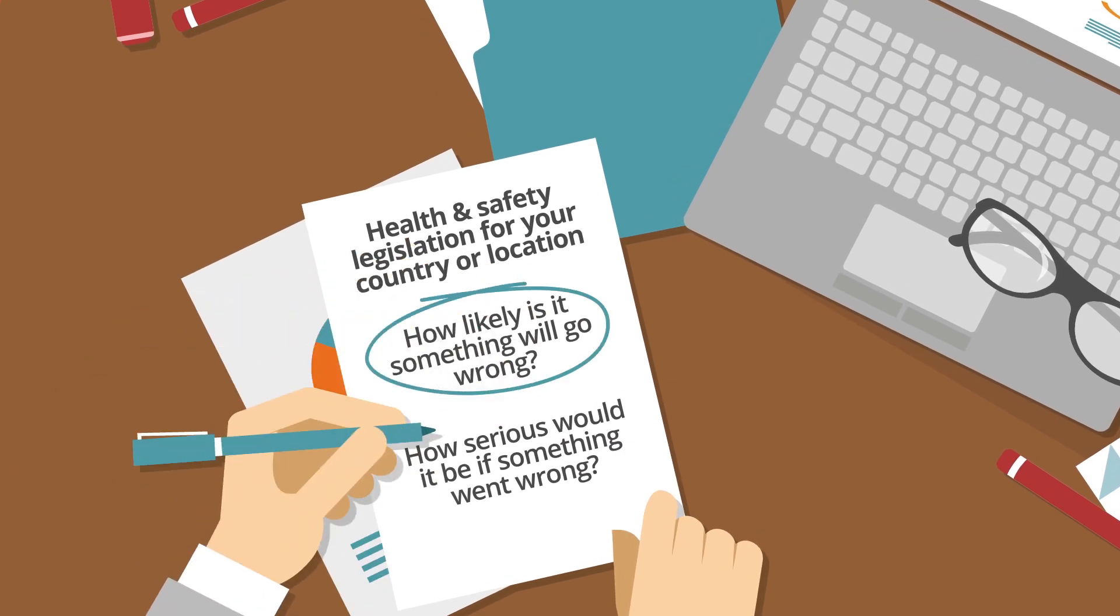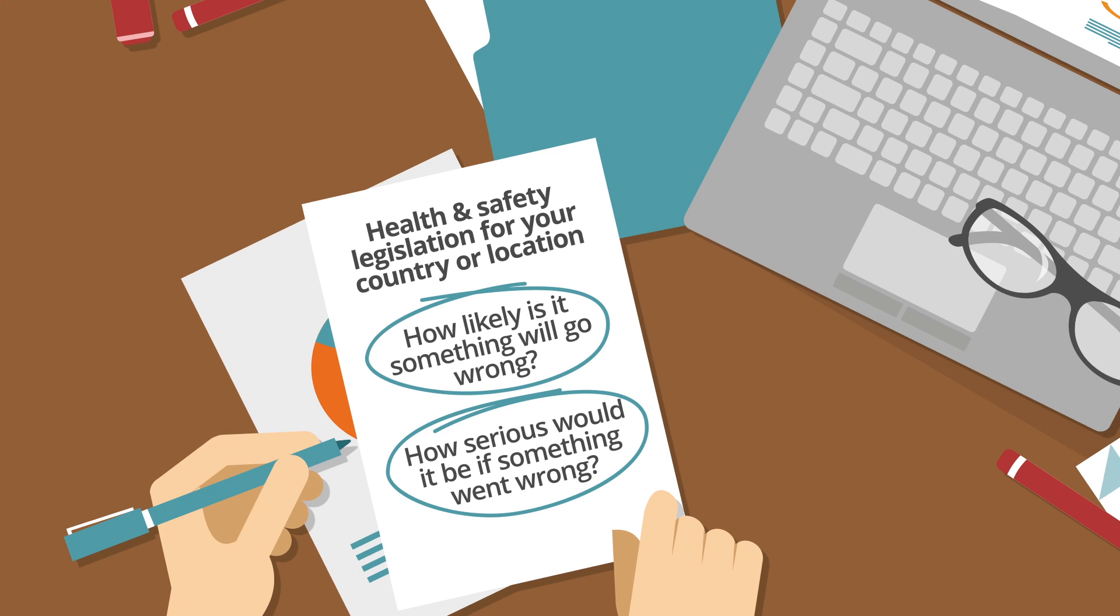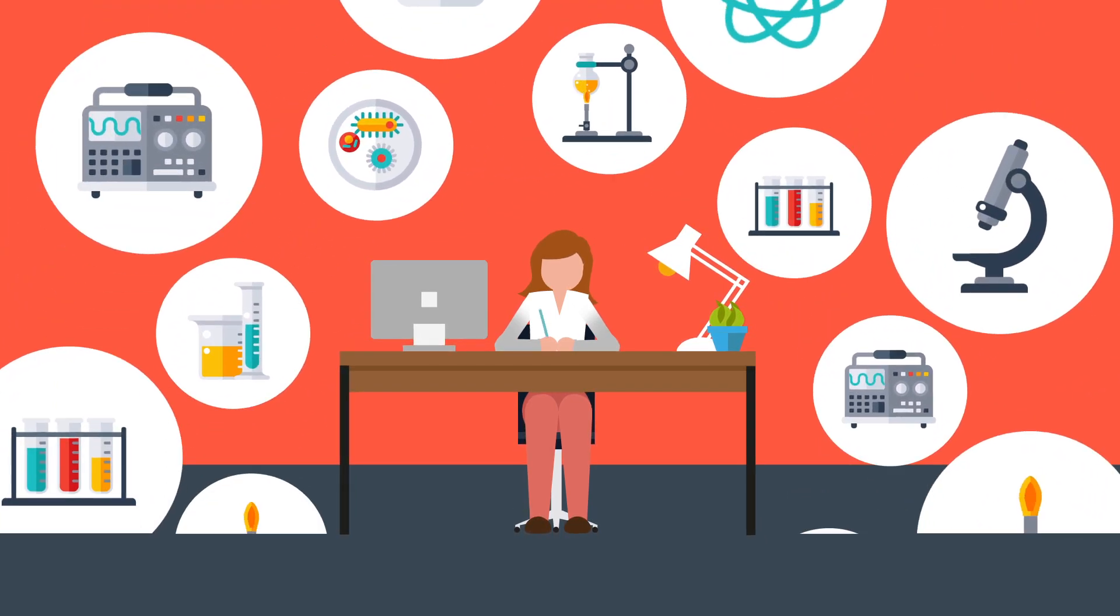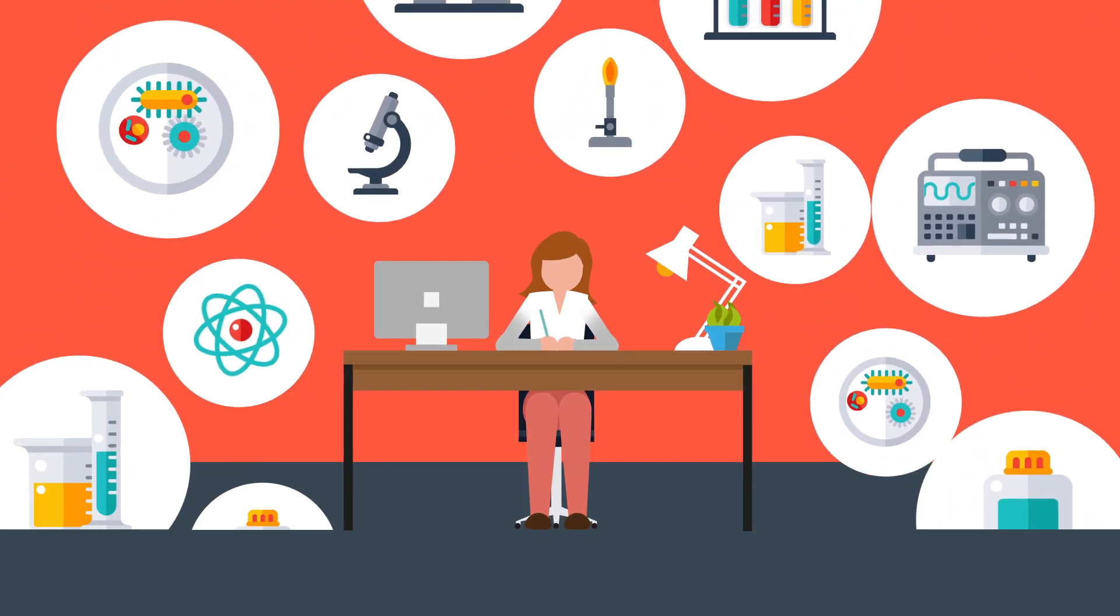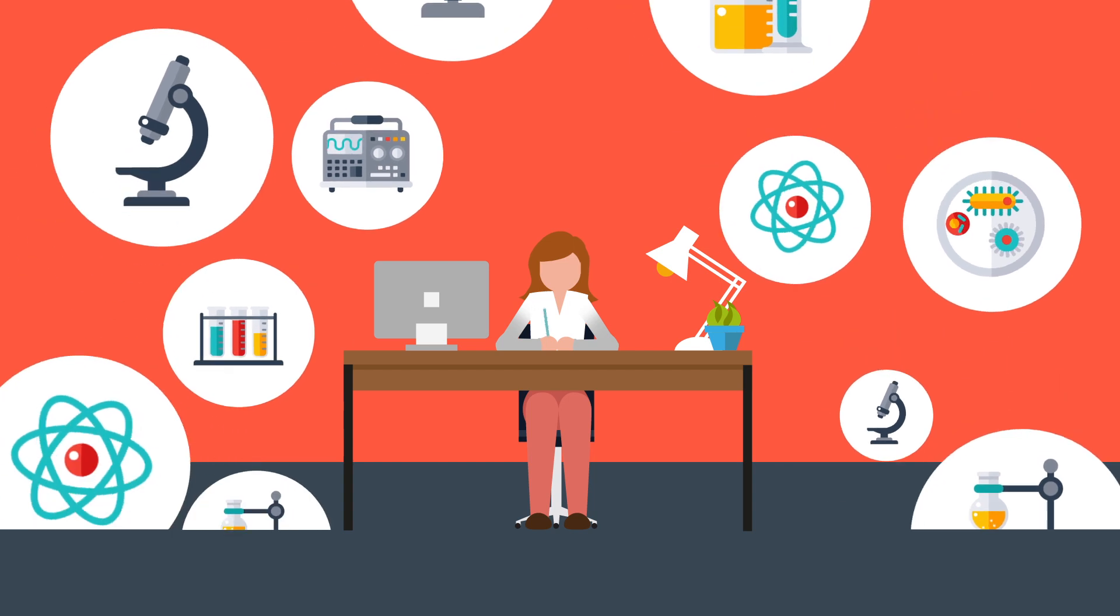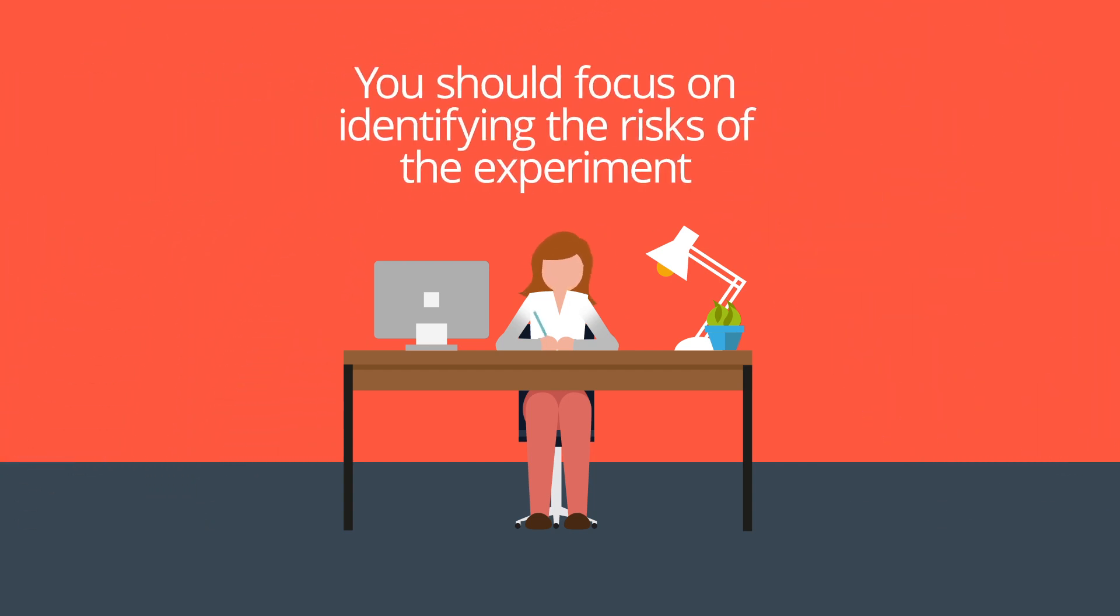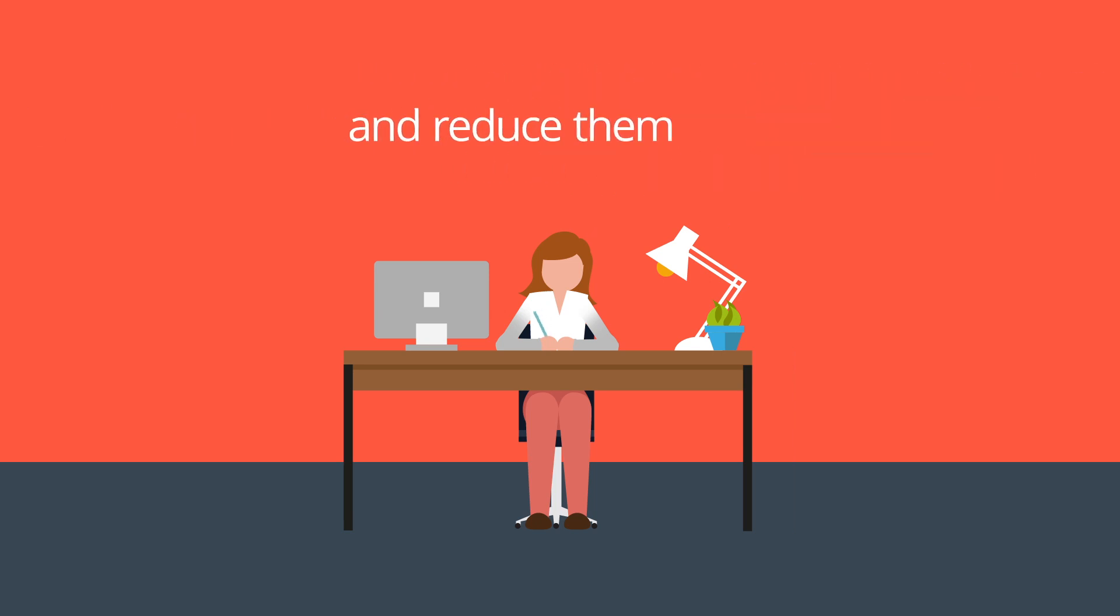You will need to answer these questions and decide what control measures are needed to reduce the risk. A risk assessment includes whether sufficient precautions are in place or if more needs to be done to prevent harm. The aim is to reduce risk to an acceptably low level. You should focus on identifying the risks of the experiment you want to do with your class and reduce them.